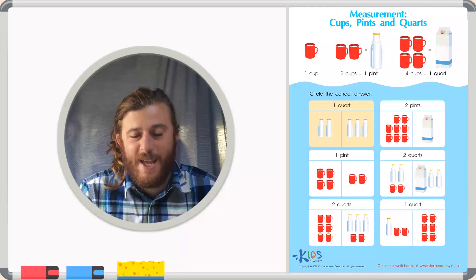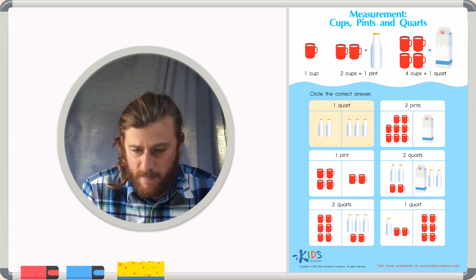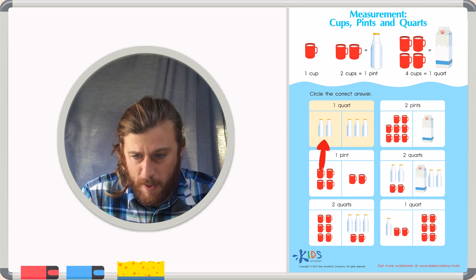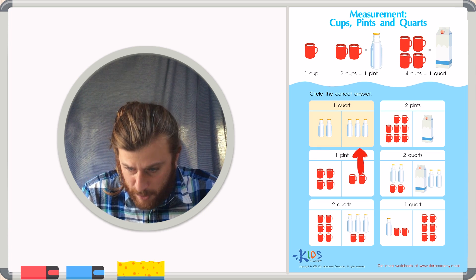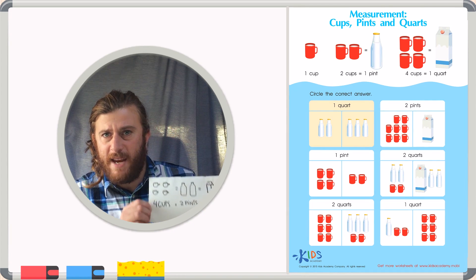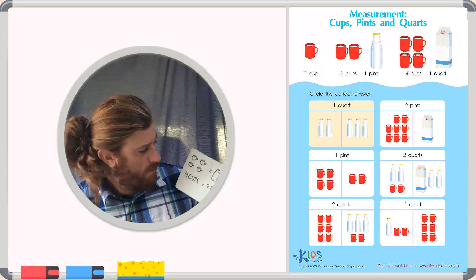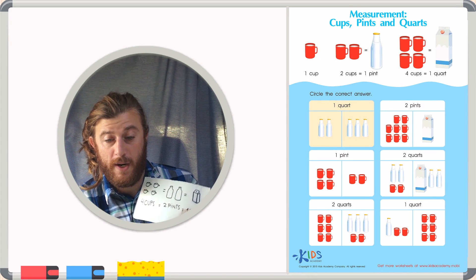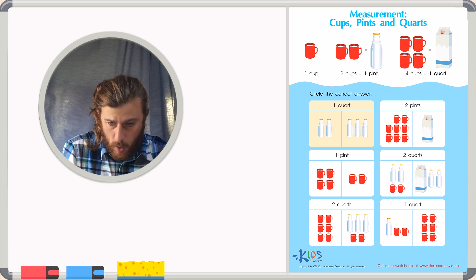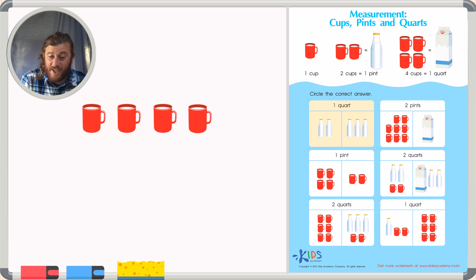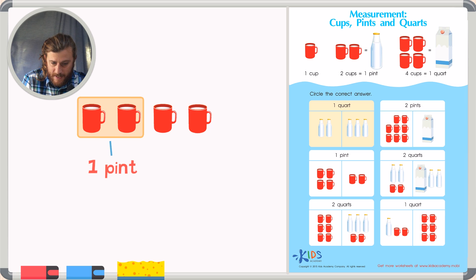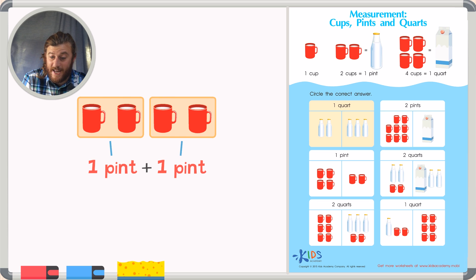Let's look at our first question. It wants to know how many pints are in a quart. In the first answer choice, I see two pints. And in the second answer choice, I see three pints. Well, according to the information given to us, two pints is equal to one quart. Because in each quart, there are four cups. And two cups equals one pint. So if we have four cups, that means we'll have one pint plus one pint, and we know that that equals two. So there are two pints inside of one quart.